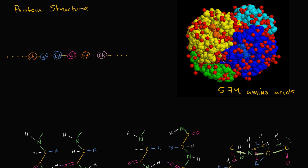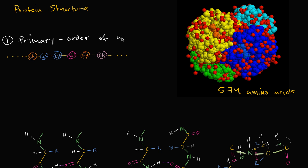So how do proteins like hemoglobin get their structure? Well, one way to think about it is that there are different layers of structure, or different degrees of structure. The first degree of structure we could call the primary structure. This is really just the sequence of the amino acids. When we talk about the translation step — when we go from mRNA to a ribosome, and the tRNA brings the amino acids and starts linking them together — it's setting up the primary structure. The information in DNA is essentially coding for what order we put the different amino acids in.